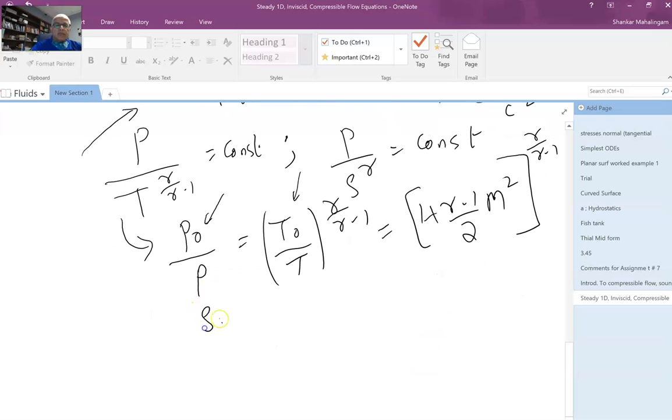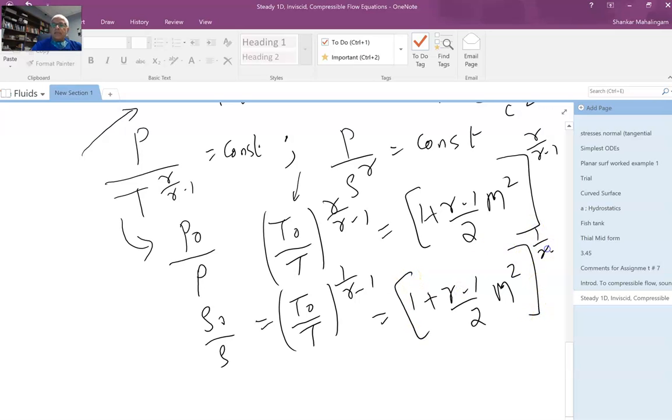Similarly, one can work out that the density ratio, stagnation density divided by density, should be (T0/T)^(1/(gamma-1)). So this will turn out to be [1 + (gamma-1)/2 * M^2]^(1/(gamma-1)), which we label as equation C. So A, B, and C relate the stagnation pressure, stagnation density, and stagnation temperature to the local flow Mach number. The assumptions are very clear: this is for one-dimensional inviscid flow analysis for a perfect gas, which is an ideal gas with constant specific heat.